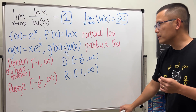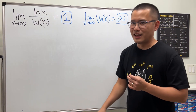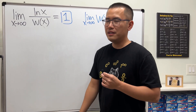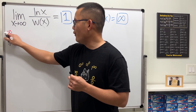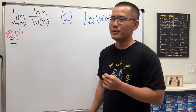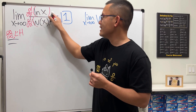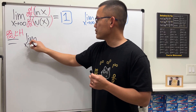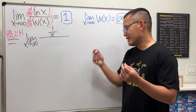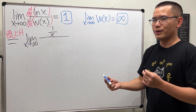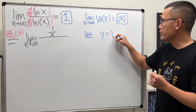Now how do we evaluate the original limit? Since ln(∞) = ∞ and W(∞) = ∞, this is an infinity over infinity indeterminate form. We can apply L'Hôpital's rule, taking the derivative of the top and bottom. The derivative of ln(x) on top is simply 1/x, but we need to find the derivative of the Lambert W function on the bottom.